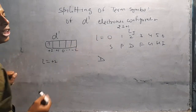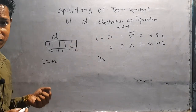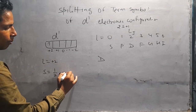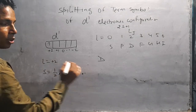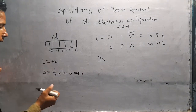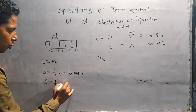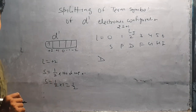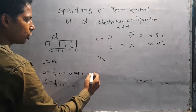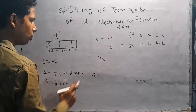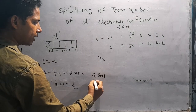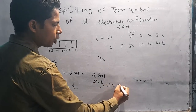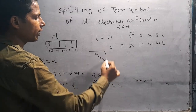अब spin multiplicity निकालनी है। इसके लिए S चाहिए। S = half × number of unpaired electrons। हमारे पास 1 unpaired electron है तो S = half × 1 = 1/2। अब 2S+1 में value रखते हैं: 2 × (1/2) + 1 = 1 + 1 = 2। तो term symbol हमारा 2D निकल के आता है।